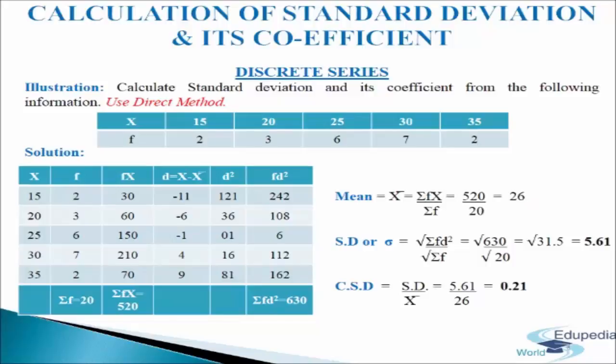In the fifth column we square the values of d from the fourth column. Minus 11 squared is 121. Minus 6 squared is 36. Minus 1 squared is 1. 4 squared is 16. 9 squared is 81.